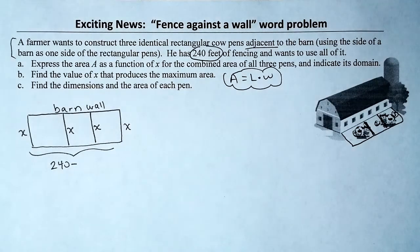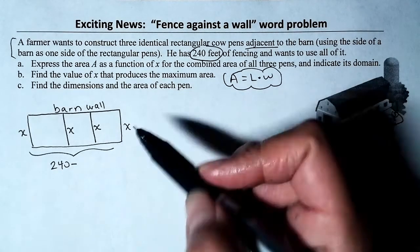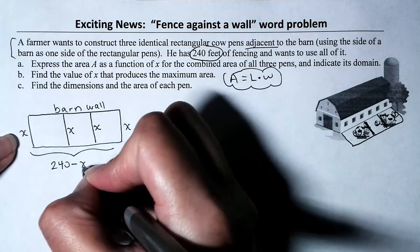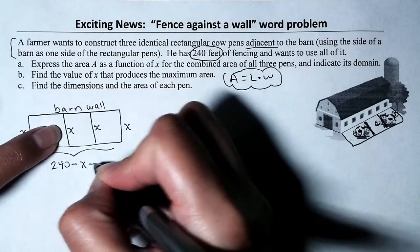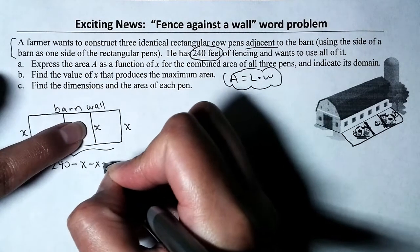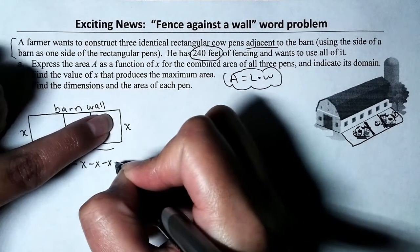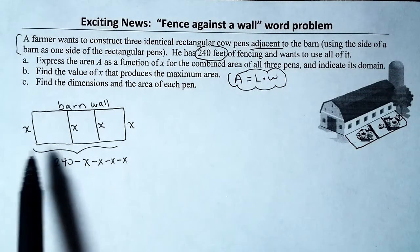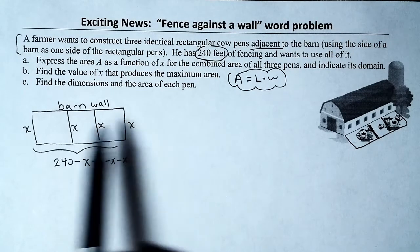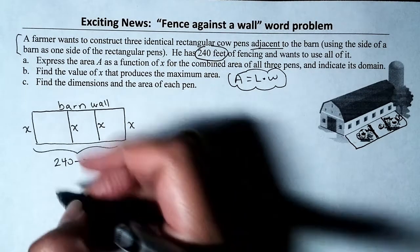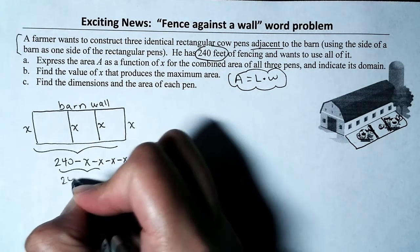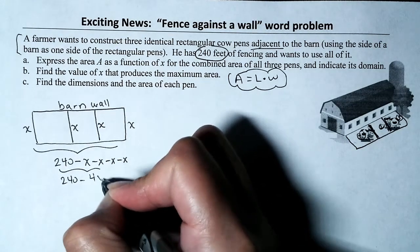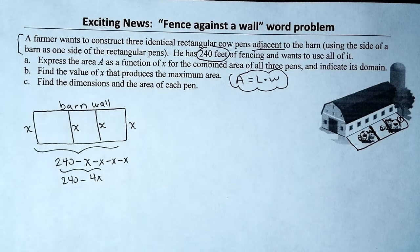We have a grand total of 240 feet and want to use all of it. We subtract the two ends and two dividers — each measuring x — from 240. So the length of the combined pen is 240 minus 4x feet.